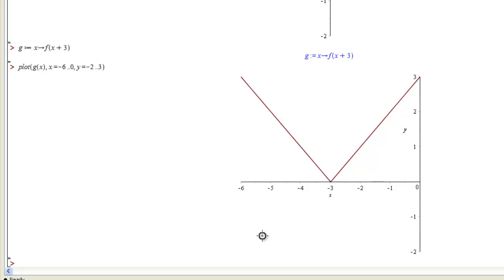Okay, so now let's shift g of x down by four spaces. Let's define yet another function, h equals, and this one's going to take x to, now we want to find g, but we want to shift it down. So we take g of x and subtract 4.